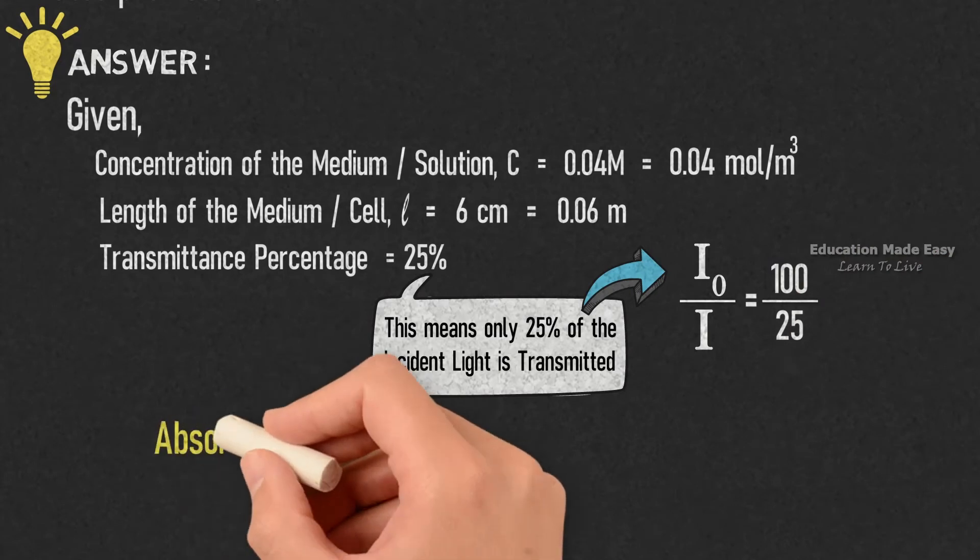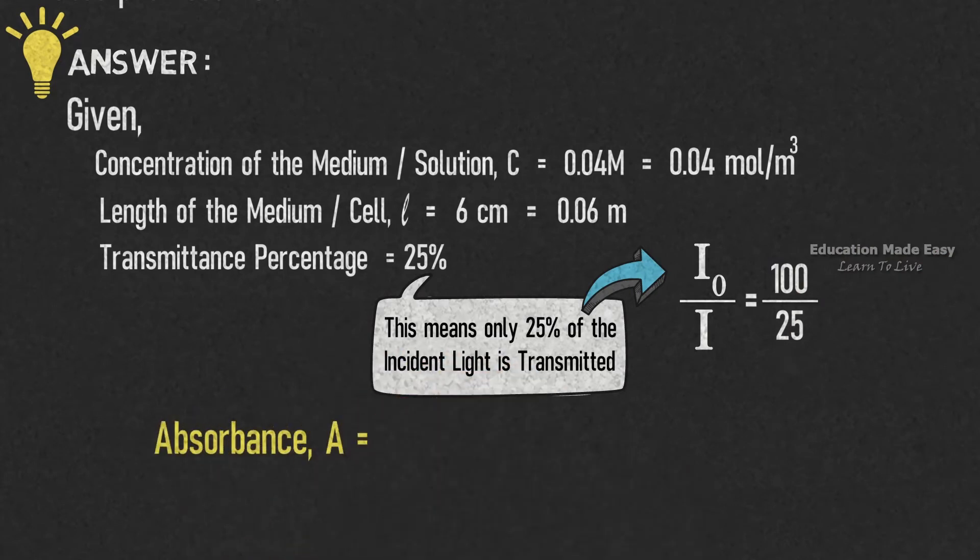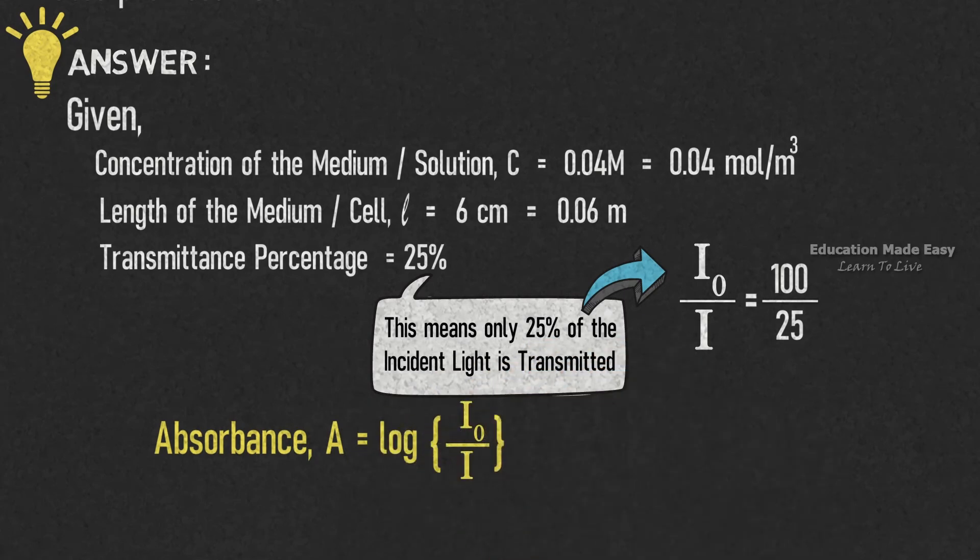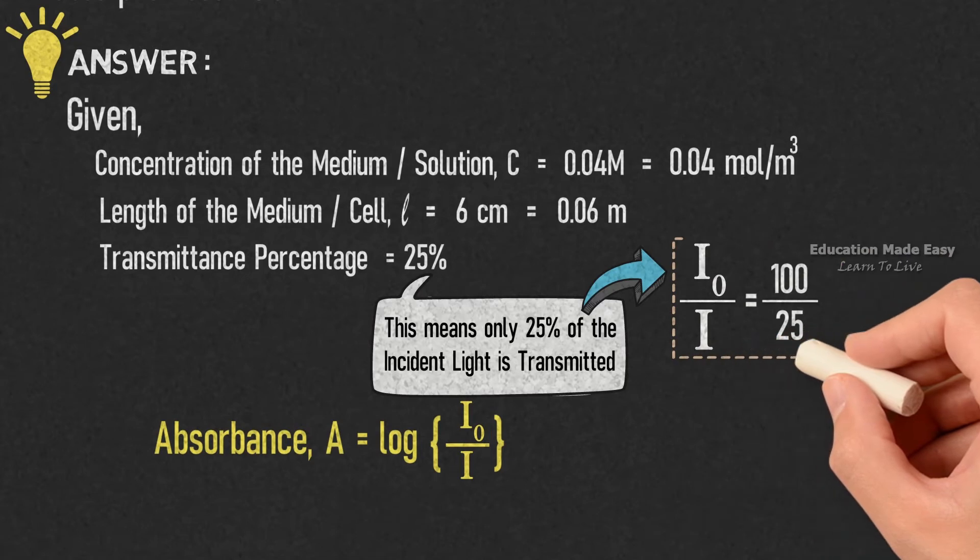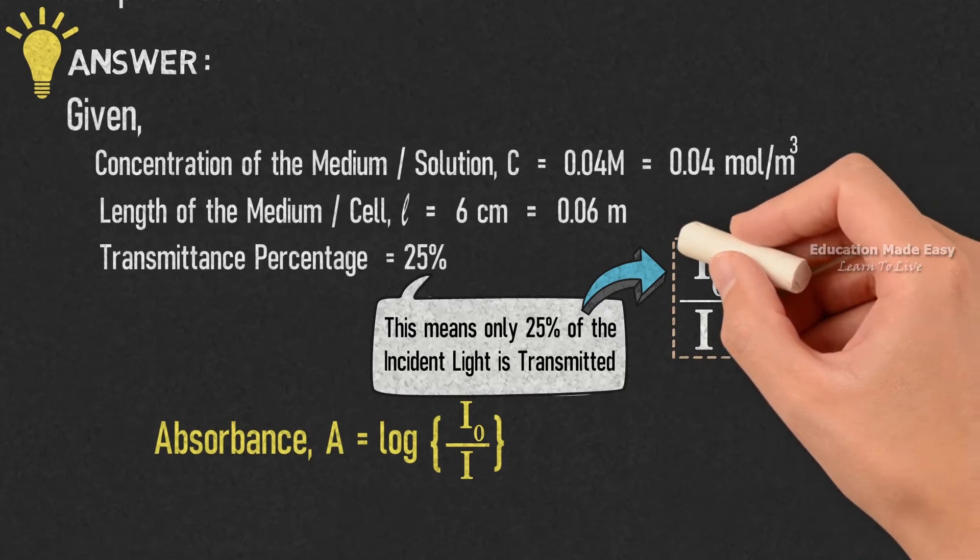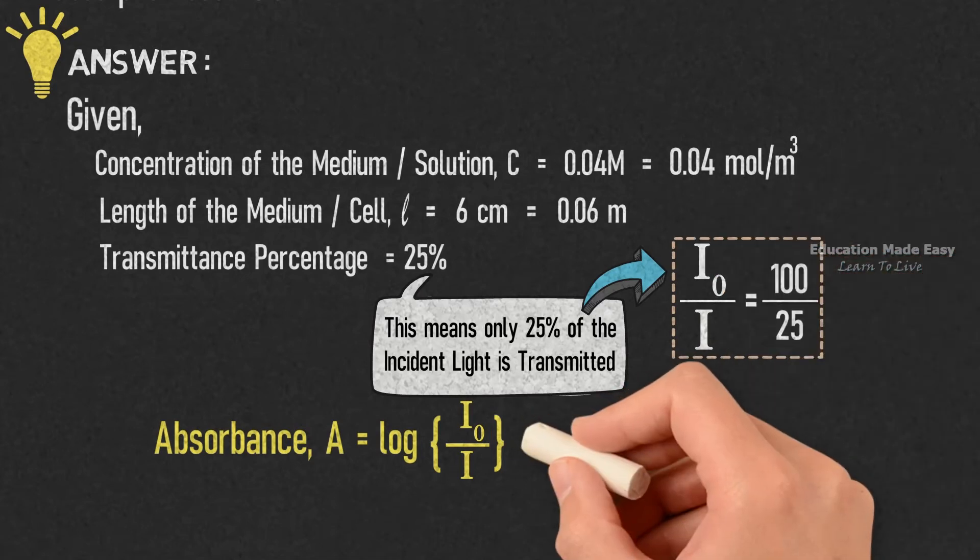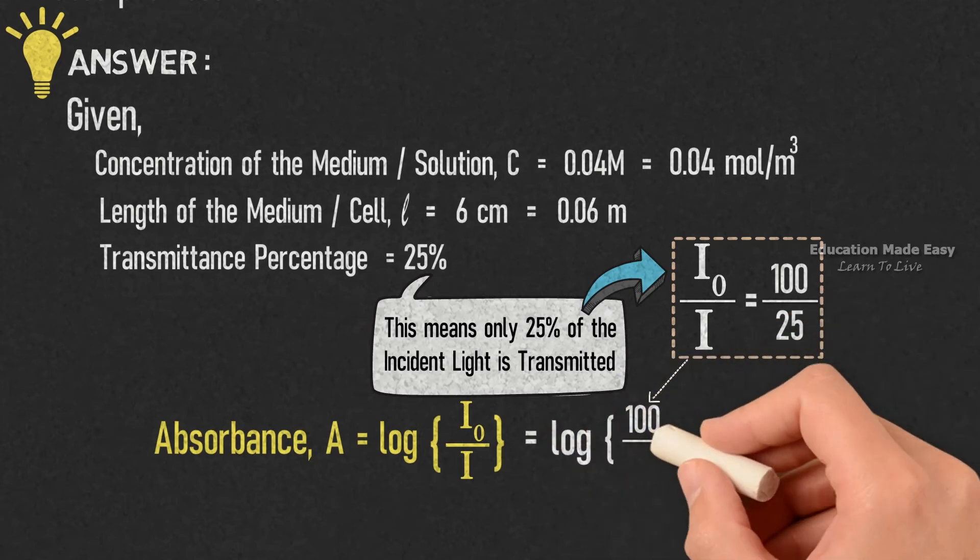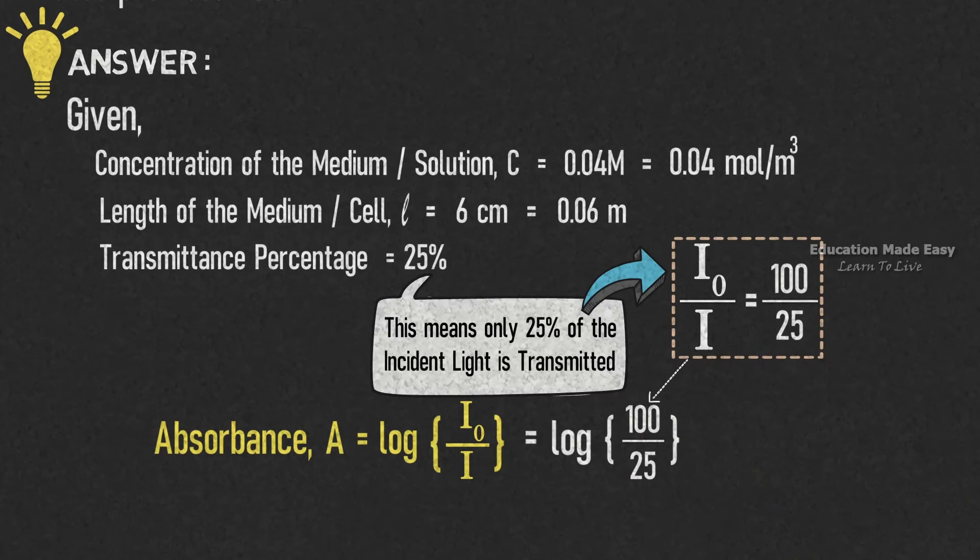Now, let us write down the formula for absorbance. A is equal to log I₀ divided by I. We already have the value of I₀ divided by I as 100 divided by 25. Let us put it down, so we can write log I₀ divided by I is equal to log 100 divided by 25 which is equal to log 4. The value of log 4 is equal to 0.60205.